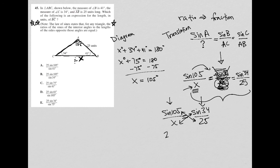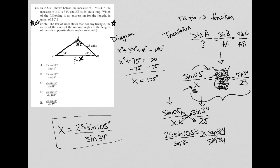So what I'd have here is 25 sine 105 is equal to X sine 34. Since I want to get X by itself, I'm going to divide both sides by sine 34. Leaving me with X is equal to 25 sine 105 degrees over the sine of 34 degrees, which looks to be answer choice B.